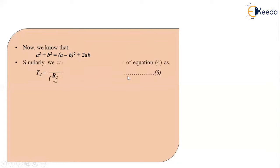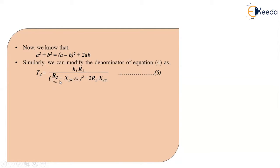Applying this identity, the equation can be modified as: TD = K1·R2 divided by [(R2/√S − X20·√S)² + 2·R2·X20]. Note that in the 2AB term, the √S factors cancel, giving 2·R2·X20. Let this be equation number 5.